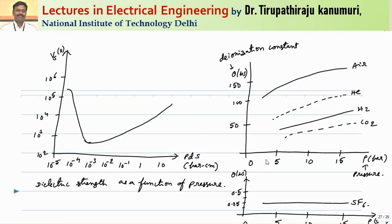Let us see how, with a change in the pressure of the gas between the contacts, the dielectric strength changes. It is observed practically that if you increase the pressure from 10⁻⁵ up to nearly 10⁻³ bar·cm, the dielectric strength goes on decreasing — it has an inverse characteristic. But after that, if you increase the pressure further, it has a positive characteristic: as the air pressure is increased, the dielectric strength is increased. So if you maintain the pressure above 10⁻³, the dielectric strength will go on increasing.